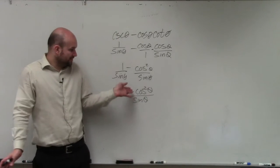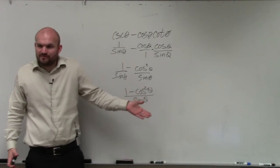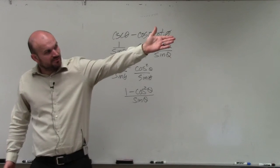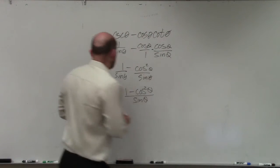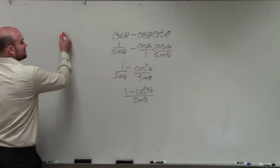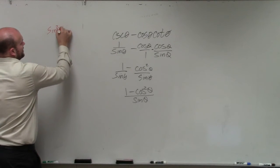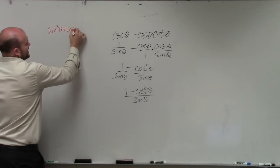Now again, we need to understand, well, what does 1 minus cosine squared of theta represent? So if you look at your Pythagorean identities, you guys realize there's an identity for cosine squared. And that's sine squared of theta plus cosine squared of theta equals 1.